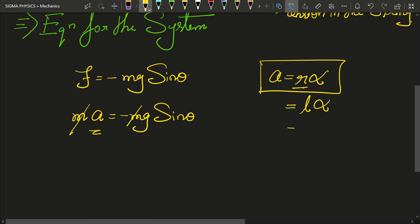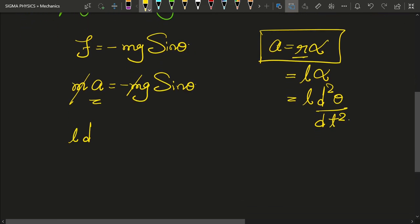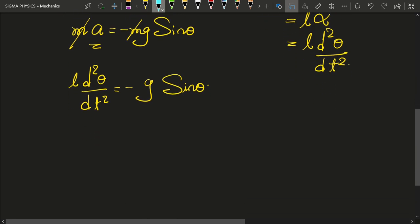Hence we are going to get a = L α, and I can write α as d²θ/dt². This equals -g sin θ because m has got cancelled. Upon rearranging—that is, I am going to take L to this side and then the entire term along with L on the other side—to get θ'' + (g/L) sin θ = 0.